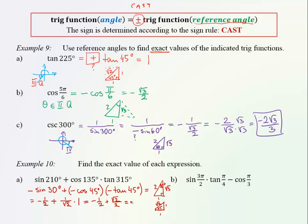We could bring the result under a common denominator, and that will be root 2 minus 1 over 2. That is the final answer.